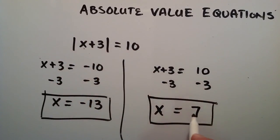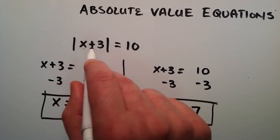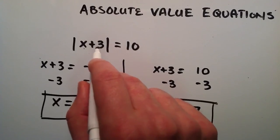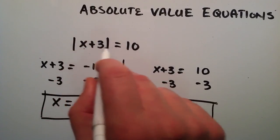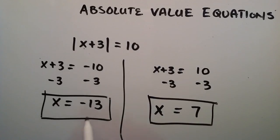If we were to plug in seven for our x up here, since x equals seven in this solution, seven plus three equals positive 10, and absolute value of a positive 10 is equal to 10. So therefore, both of these solutions satisfy the above absolute value equation.